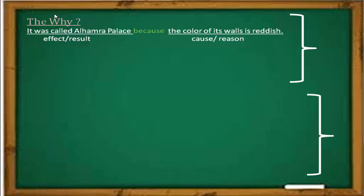We asked the question 'why' to get the reason — to get the cause. Why was it called Alhambra Palace? Because the color of its walls is reddish. The color of its walls being reddish is the cause. And what happened as a result? It was called Alhambra Palace. That is what happened — that is the effect, the result.